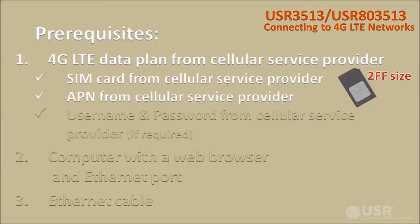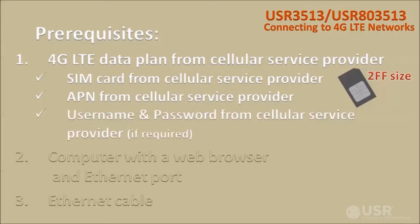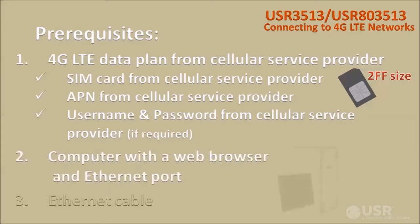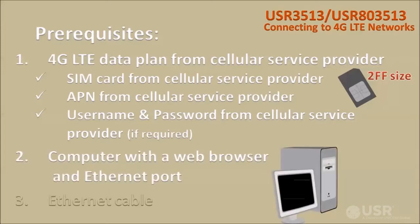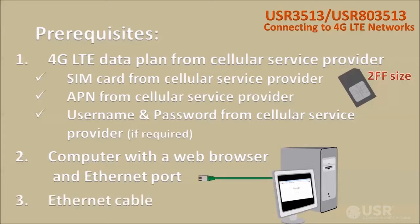You'll need the access point name from your cellular service provider. If the cellular network requires an assigned username and password, you'll need those from your cellular service provider. You'll also need a computer with a web browser and an Ethernet port, and an Ethernet cable to connect the gateway to your computer.